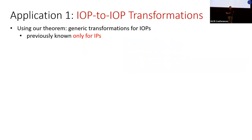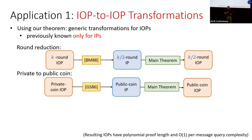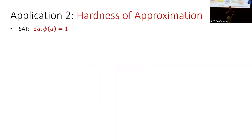Our first application is IOP-to-IOP transformations — new generic transformations for IOPs that were previously only known for IPs. For example, to reduce the number of rounds: given a k-round IOP, we want a k/2-round IOP. We treat the IOP as an IP, allow the verifier to read everything, use a classical transformation from k-round IP to k/2-round IP, then leverage our main theorem to get back to a k/2-round IOP. Similarly we can get private-to-public coin for IOPs via the Goldreich-Sipser transformation, or perfect completeness.